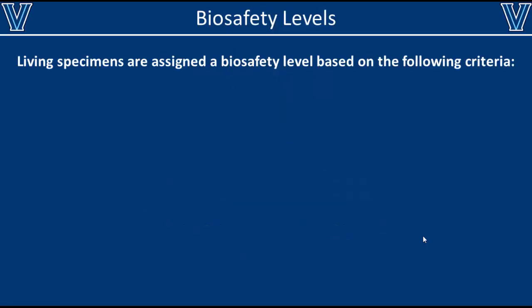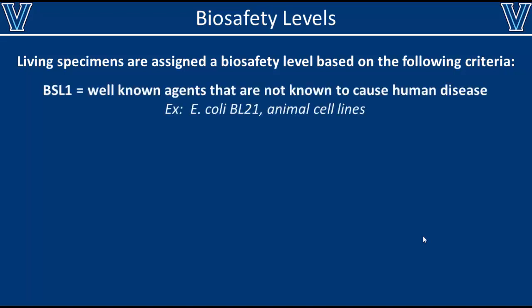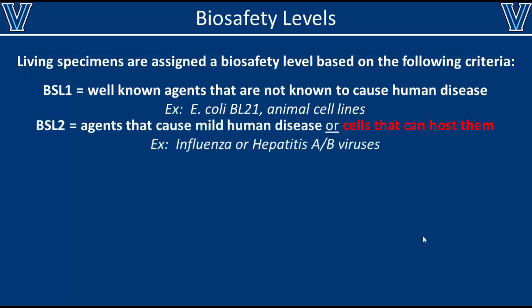Overall, biohazards are classified as one of four biosafety levels. The least dangerous biosafety level is BSL-1, which includes agents that are not known to cause any diseases in humans. For instance, the E. coli in your gut or animal cell lines that are non-infectious are both BSL-1. BSL-2 agents are able to cause mild diseases in humans, for instance influenza or hepatitis A and B. It is important to note that BSL-2 also includes human cell lines that can host BSL-2, 3, or 4 pathogens.